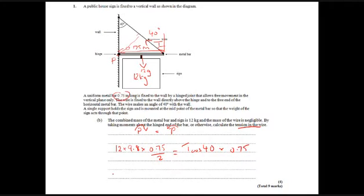OK, so that gives us T equals 12 times 9.8 times 0.75 over 2 times cos 40 times 0.75. Obviously they cancel out, but if you put that into your calculator, you'll find that you get 77 newtons of tension in the wire.